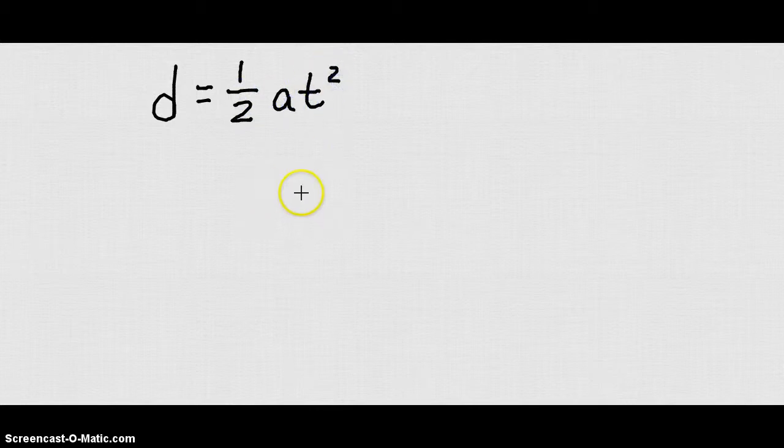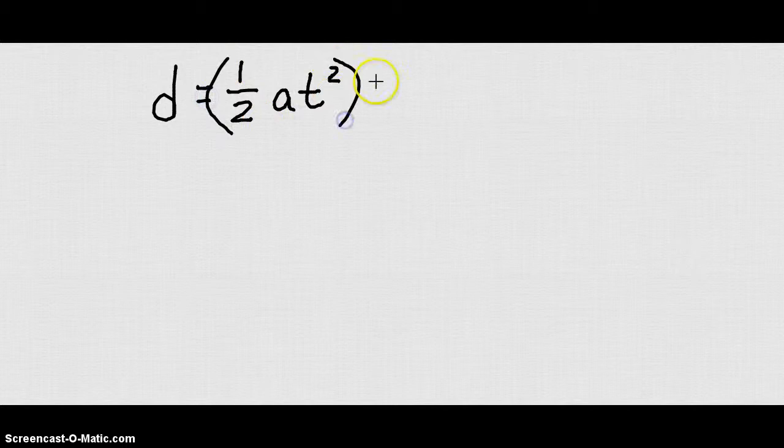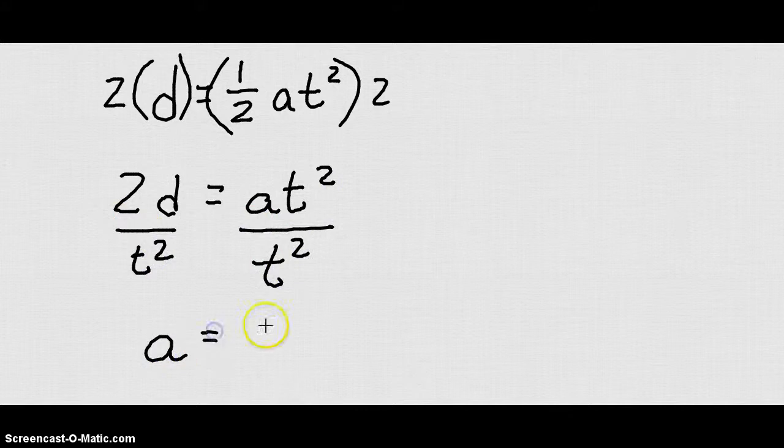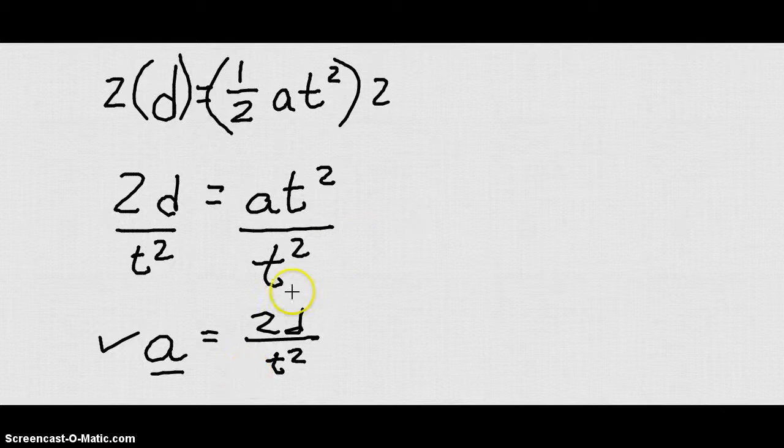And finally let's look at the equation for free fall. D equals 1 half at squared. What if we wanted to solve that for a? Well if we multiply both sides by 2 we can get rid of that 1 half fraction. And we have 2d equals at squared. Now if we divide both sides by t squared, we're going to end up with a is equal to 2d over t squared. And we successfully solved that equation for a.